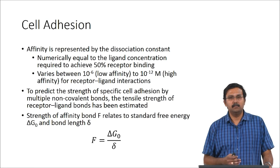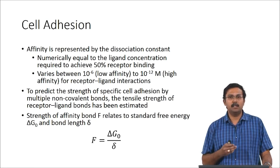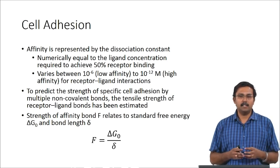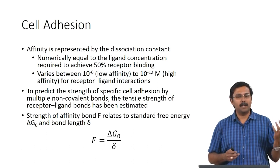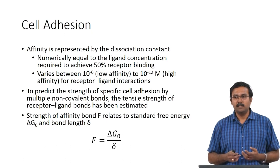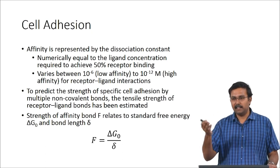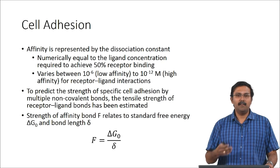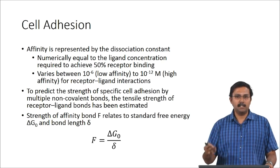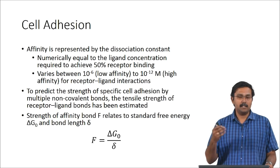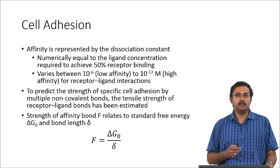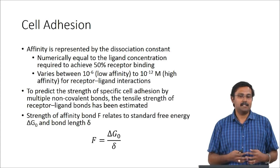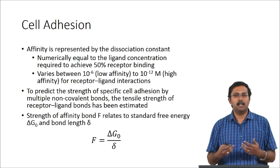Affinity is represented by the dissociation constant, which is numerically equal to the ligand concentration required to achieve 50 percent receptor binding. This is like your Michaelis-Menten constant — the 50 percent reaction rate is achieved at a particular substrate concentration, that is your Km. Similarly, the ligand concentration at which you get 50 percent receptor binding is the dissociation constant. This varies between 10⁻⁶ to 10⁻¹² molar — 10⁻⁶ is considered low affinity whereas 10⁻¹² is considered much higher affinity.